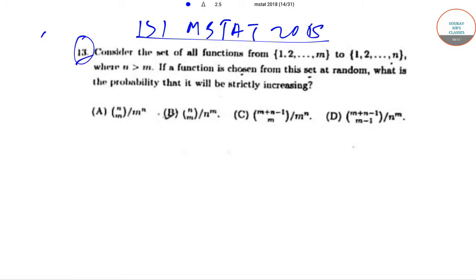Today we will be solving question number 13. In question number 13, it has been said that let us consider the set of all functions from the set {1, 2, ..., m} to the set {1, 2, ..., n}, where n is greater than m. If a function is chosen from this set at random, then what is the probability that it will be strictly increasing?